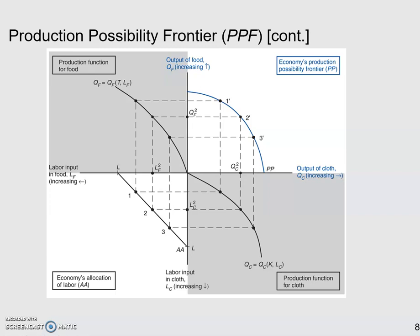In the previous video, we already derived this four-quadrant diagram, and we said that in the first quadrant, this is the PPF. We know this for sure because the two axes here show the quantity of food and cloth respectively.